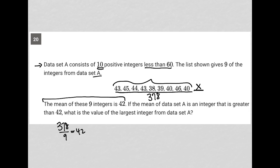How do I find the mean of data set A? Well, the mean of data set A will be the 378 from the first nine values plus X from the missing 10th value. Now we're dividing by 10 because we have all 10 integers from data set A. And we're being told that that must be greater than 42.